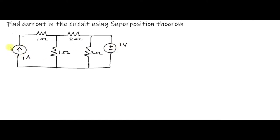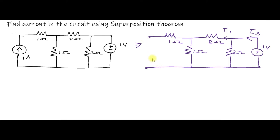I am going to deactivate the current source. The current source is deactivated by open-circuiting its terminals. The redrawn circuit shows the open-circuited current source with only the 1 volt voltage source active. Now I am going to determine Is. Is can be determined by taking voltage divided by resistance; here the voltage is 1 volt.